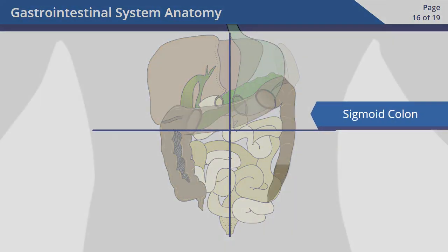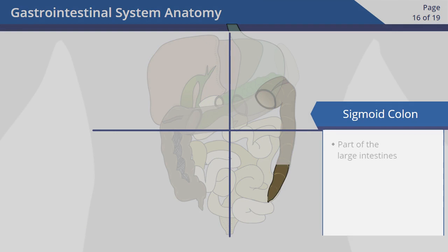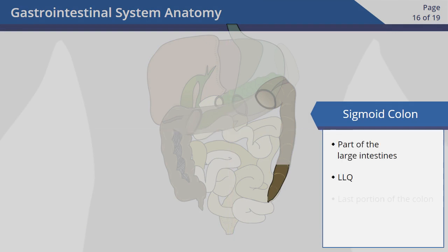The sigmoid colon is part of the large intestines. It's found in the left lower quadrant. This is the last portion of the colon, and it attaches to the rectum. The sigmoid colon is tasked with holding feces until you go to the bathroom.